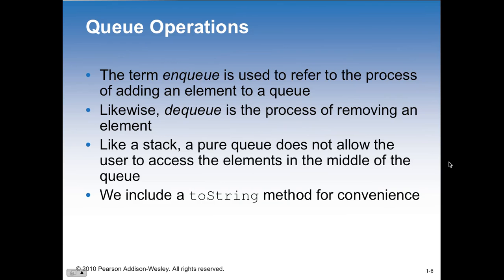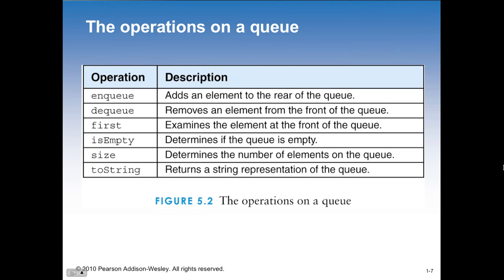We have different operations. We don't have a pop and a push, because we don't push anything on and pop it off. Instead we have enqueue and dequeue. So the term enqueue - E-N-Q-U-E-U-E - is used to refer to the process of adding an element to the queue. Dequeue is the process of removing an element from the queue. Like a stack, a pure queue does not allow users to access elements in the middle of the queue. We don't normally have operations to insert in the middle - that's like cutting in line. We include a toString method for convenience so we can print the items out to the screen.